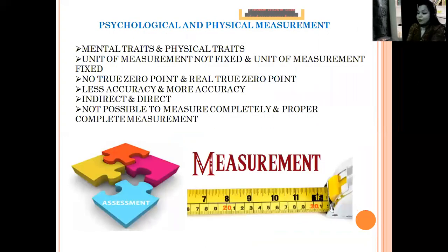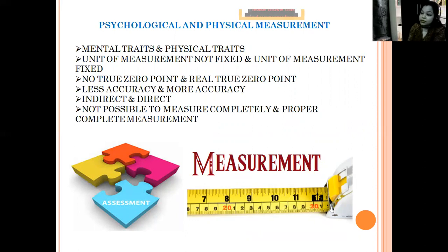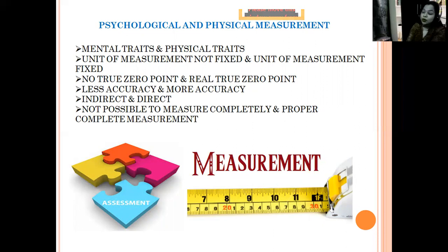There are two types of measurements: psychological and physical. In psychological measurement, we measure mental traits and a person's attitude. In physical measurement, we measure all the qualities of a human that are in physical form. In psychological measurement, mental traits and attitudes cannot be physically seen. There is no exact fixed unit of measurement in psychological measurement, unlike physical measurement.